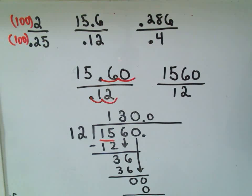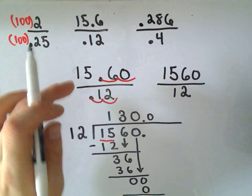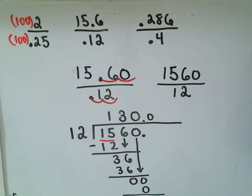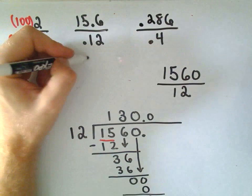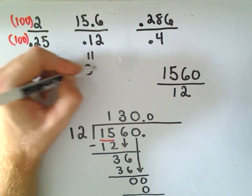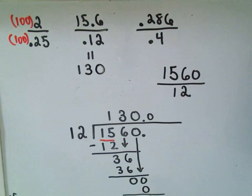So what it says is if we take the number, the original number, 15.6 divided by 0.12, that's simply going to equal the number 1, 3, 0, 130.